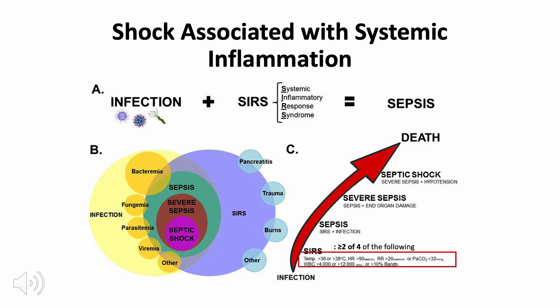To classify a patient as having sepsis, there must be a focus of infection plus SIRS (Systemic Inflammatory Response Syndrome). SIRS requires satisfying at least two of four criteria: temperature less than 36°C or greater than 38°C; heart rate greater than 90 beats per minute; respiratory rate greater than 20 cycles per minute or arterial pCO2 less than 32; and WBC count less than 4,000 or greater than or equal to 12,000, or more than 10% band forms.